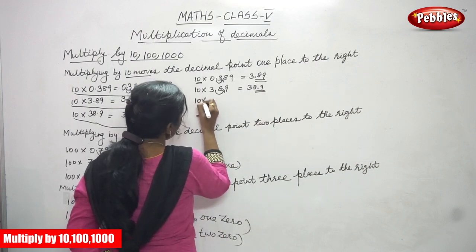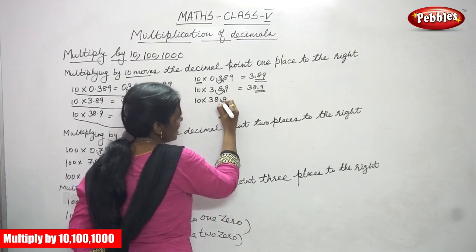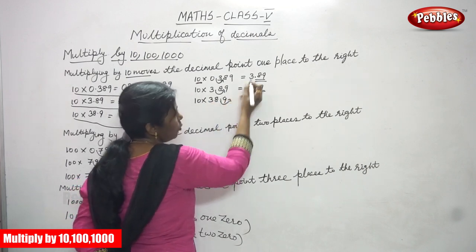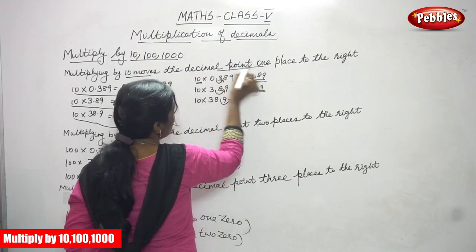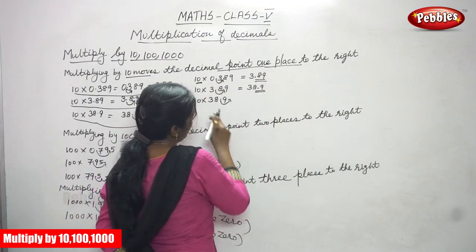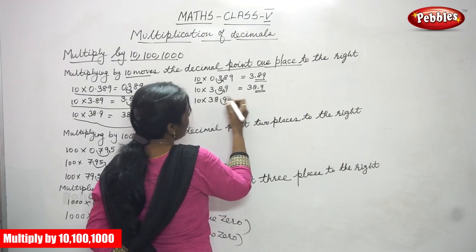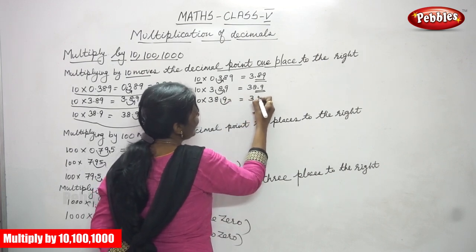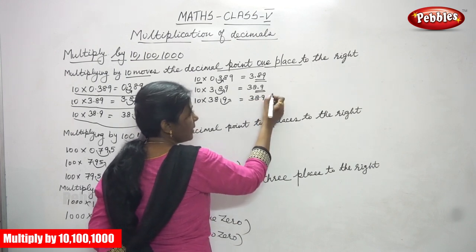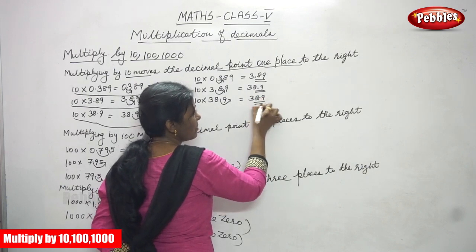Next, 10 into 38.9. This decimal point moves one place to the right. So the decimal point moves one place to the right — it becomes 389. This point will come here, but there are no digits after it. There is no value, so it becomes a whole number.